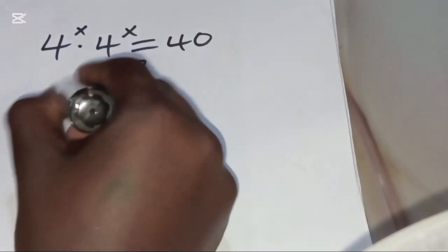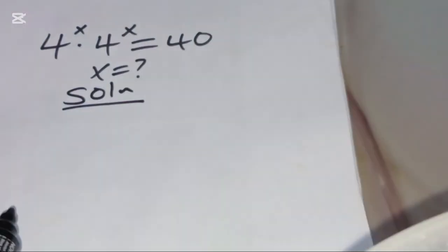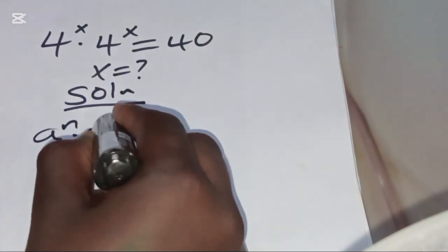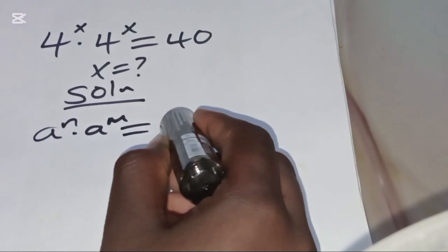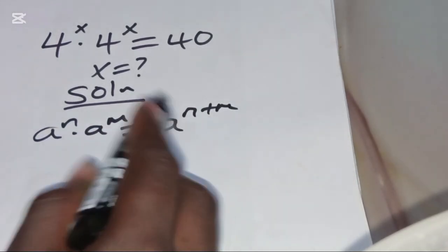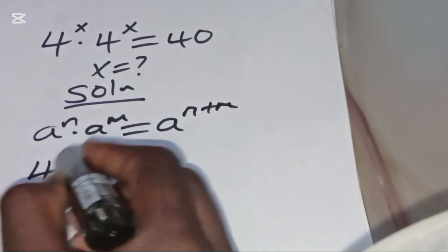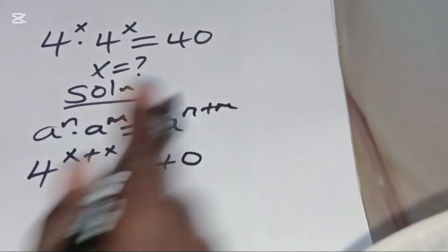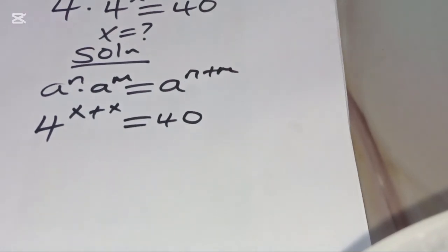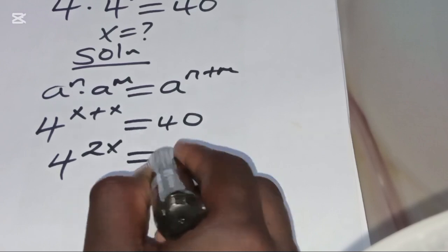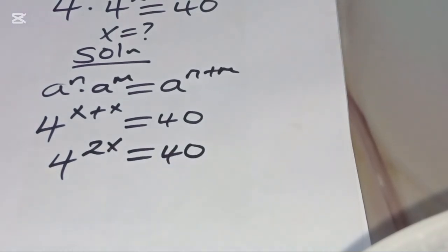The solution: 4^x times 4^x is in the form of a^n multiplied by a^m, which can be expressed as a^(n+m). Applying this property, we get 4^(x+x) = 40, so 4^(2x) = 40.